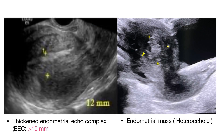Looking at these images: the first shows a thickened endometrial echo complex measuring 12 mm — obviously more than 10 mm — which in the correct clinical scenario favors RPOCs. The second feature is an endometrial mass: a hetero-echoic or mixed echogenicity mass within the endometrium. This finding also favors the presence of RPOC.